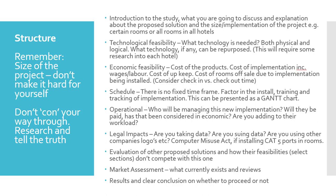Scheduling — there is no fixed timeframe. You need to factor in install, training, and tracking of implementation, and this can be presented in a Gantt chart. Consider order time, shipping time, and getting items into the UK. We've seen over the last year, especially with COVID and Brexit, that ordering from the continent and further afield is really problematic. You want everything installed within six months so you can get a good dataset from measuring success. If it goes beyond six months, the original installations may need replacing or start showing issues, making data obscure and difficult to track.